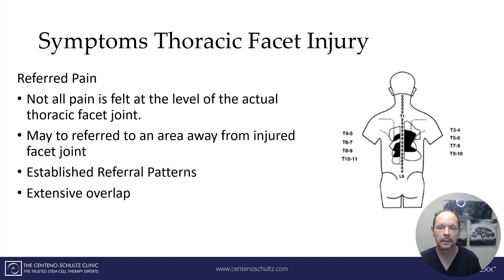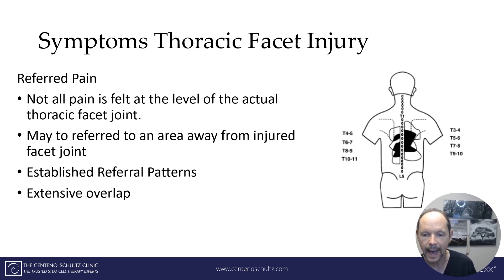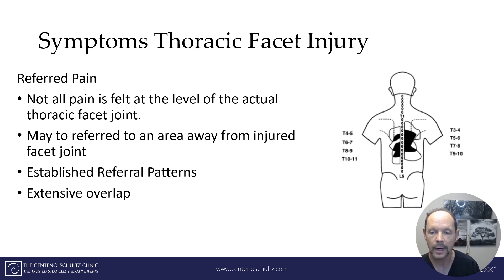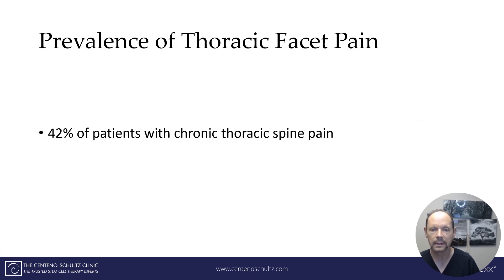This referred pattern is depicted here to the right. This was extensive work done by Dreyfus and colleagues. You can see there are different areas in the thoracic spine that are painful at different levels. For example, at T3-T4, pain is slightly on the inferior aspect of the scapula. The downside to this mapping done by Dreyfus is there's an extensive amount of overlap, so there can be many different causes of pain in the mid-back. The prevalence of thoracic facet pain is about 42% of those patients with chronic thoracic pain.